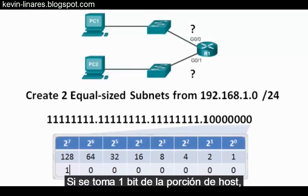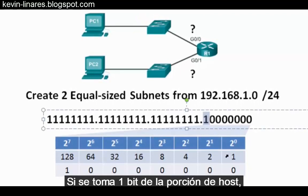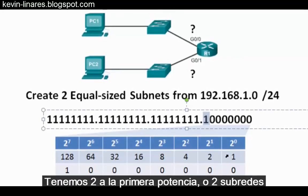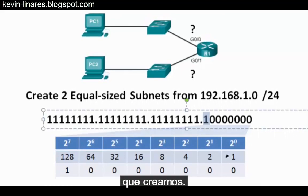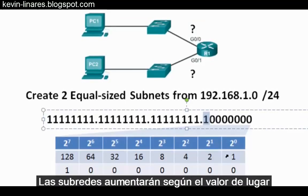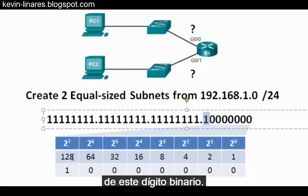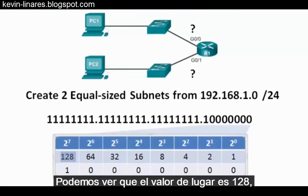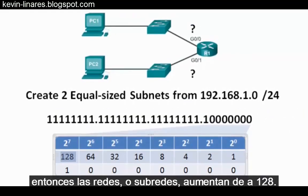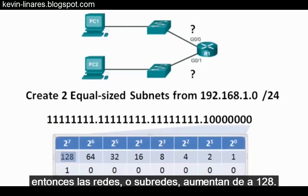By borrowing 1 bit from the host portion, we have 2 to the 1st power or 2 subnetworks that we create. The subnetworks will go up by the place value of this binary digit. We can see that the place value is 128, so the networks or subnetworks will go up by 128.